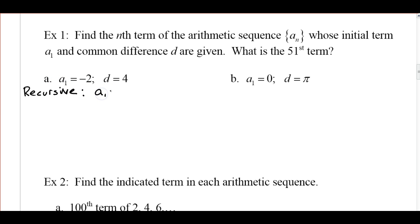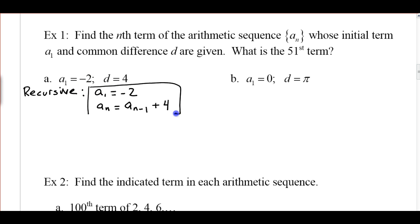Starting with the recursive formula: we know we have to define our seed value — a sub 1 is going to be negative 2. Then each value after that, a sub n, is going to be the term before it, a sub n minus 1, plus the common difference, which is 4. This is our recursive formula. It's more useful for computer programming than the explicit formula — if you've done any computer programming, you may have used recursive formulas.